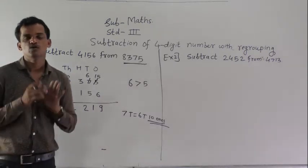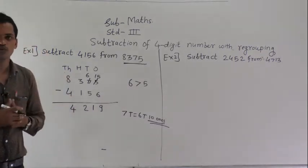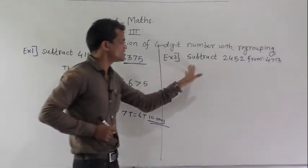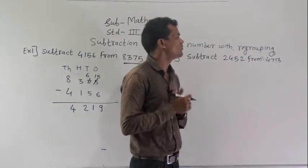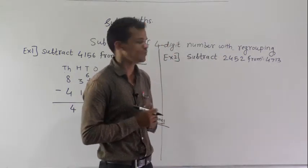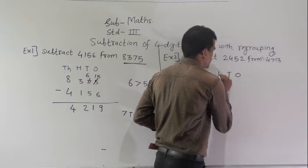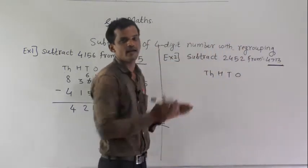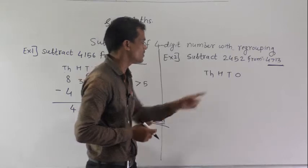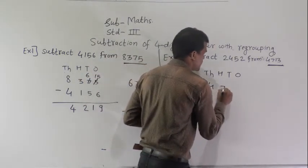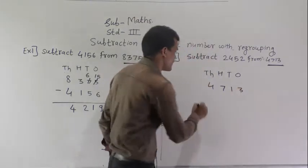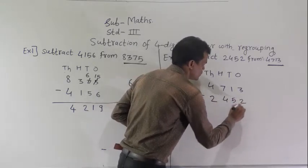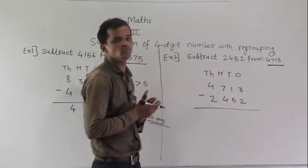Like this, you have to solve the subtraction of 4-digit numbers with borrowing or with regrouping. Next example: subtract 2,452 from 4,713. First, arrange those two numbers into the columns, and always write the bigger number on top and the smaller number underneath. We have arranged these two numbers into column.